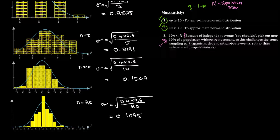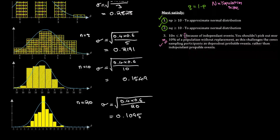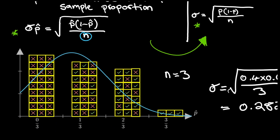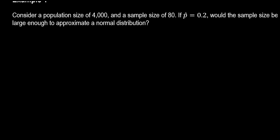As our sample size gets larger, the standard deviation gets smaller. This should make sense because in our formula, N is on the denominator — so the expression is inversely proportional to N, meaning as N gets bigger, this expression gets smaller. For example: consider a population size of 4,000 and a sample of 80, where P-hat was found to be 0.2. Would the sample size be large enough to approximate a normal distribution?